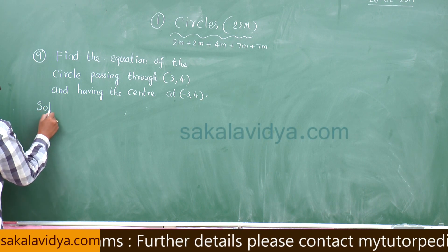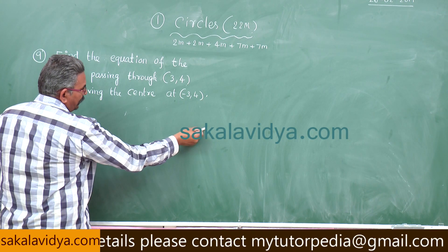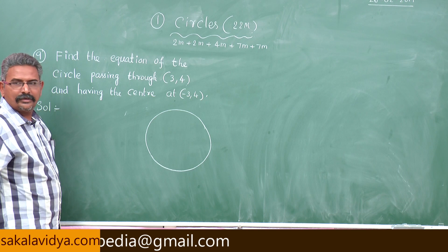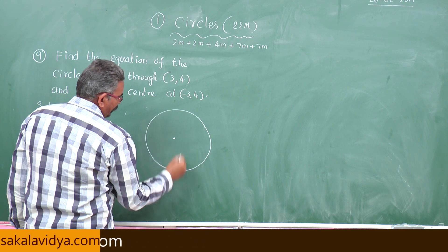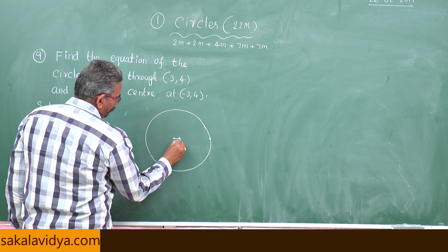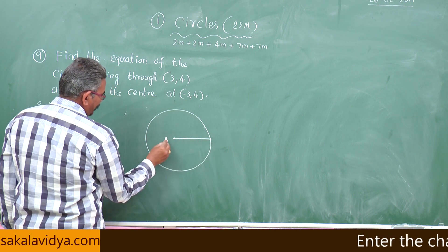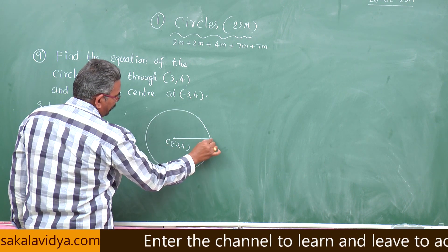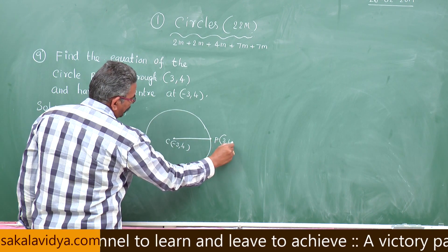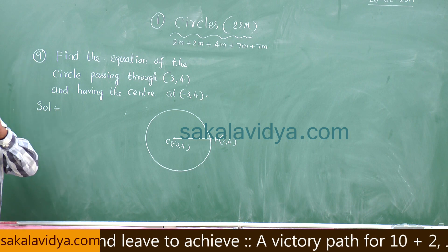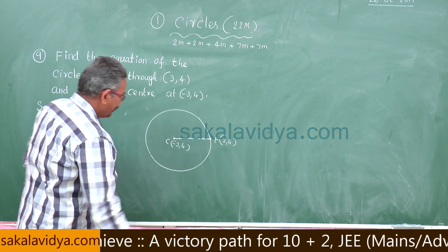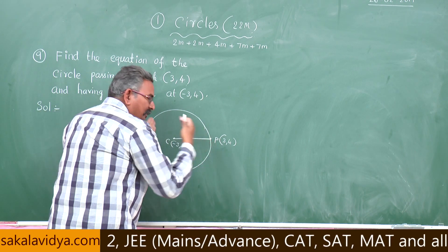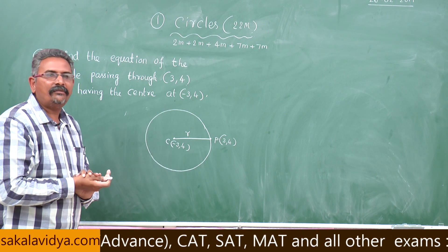First, let us visualize this. Let us draw the figure of the circle, the centre, and the passing through point. Let us join them. Let the centre C have coordinates minus 3 comma 4, and let P be the point on the circle given as 3 comma 4. CP is nothing but the radius. So if we find the distance from C to P, we get the radius r.